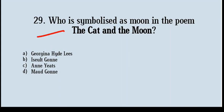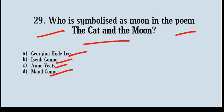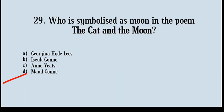Who is symbolized as the moon in the poem 'The Cat and the Moon'? Options: Georgina Hydeley, Iseult Gonne, Ann Yeats, Maud Gonne. Correct answer: option number D, Maud Gonne. In 1917, Yeats proposed to Maud Gonne, who rejected him, and then Yeats proposed to her daughter Iseult, who also rejected him.